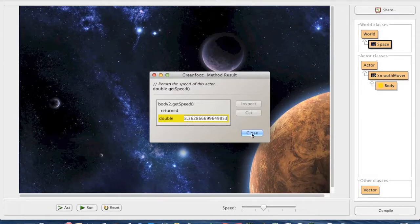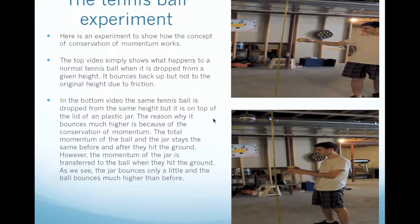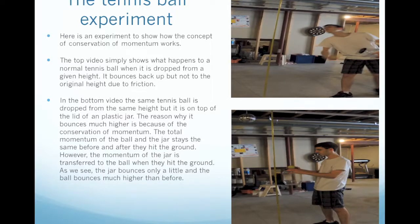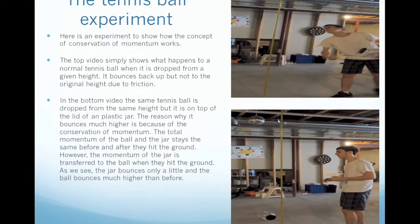Finally, we have another experiment that demonstrates the major concepts used in the slingshot effect. The top video simply shows what happens to a tennis ball when it is dropped from a given height — it bounces back up, but not to the original height due to friction. In the bottom video, the same tennis ball is dropped from the same height but placed on top of the lid of a plastic jar. The ball bounces much higher because of the conservation of momentum. The total momentum of the ball and the jar stays the same before and after they hit the ground. The momentum of the jar is transferred to the ball when they hit the ground, so the jar bounces only a little and the ball bounces much higher than before.